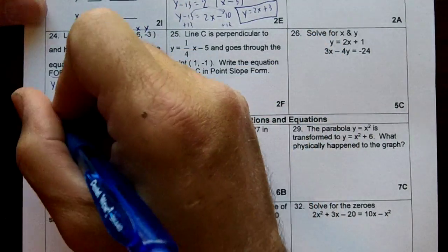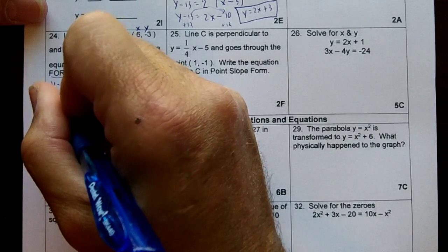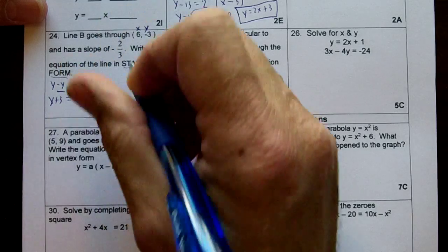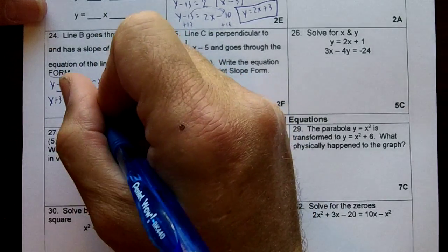The opposite of negative 3 is a positive 3. So this is going to be y + 3 equals, our slope is -2/3, parentheses, x - 6.